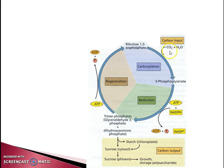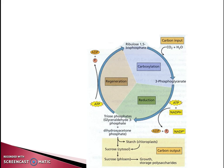In the carboxylation step — the first enzymatic step in this cycle — carbon dioxide and water react with the 5-carbon acceptor molecule RuBP (ribulose-1,5-bisphosphate), generating two molecules of the 3-carbon intermediate 3-phosphoglycerate. This 3-phosphoglycerate is then converted into 3-carbon carbohydrates — triose phosphate — in the reduction phase by enzymatic reactions driven by the photochemically generated ATP and NADPH.